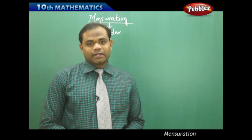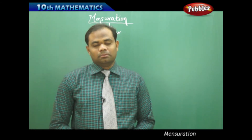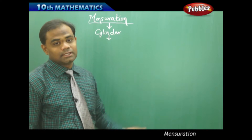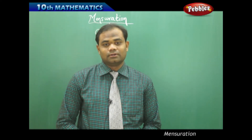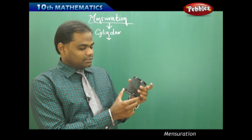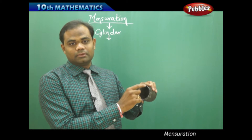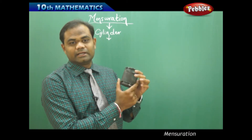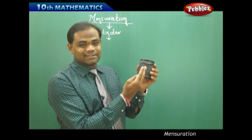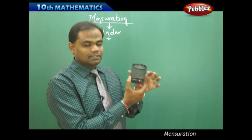The next solid structure we are going to discuss in mensuration is a cylinder. A cube and a cuboid have their own respective shapes and dimensions. Similarly, let's see what a cylinder is. Imagine I have this pen stand — it has a circle at the base and is circular at the top, and the side is completely curved. This is called a cylinder.